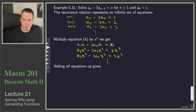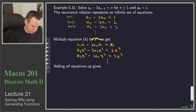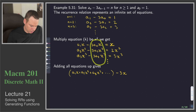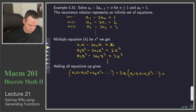At this stage we add up all these equations. When we sum them all up, what we get on the left is a_1·x + a_2·x² + a_3·x³ + ··· minus 3x times (a_0 + a_1·x + a_2·x² + ···), and on the right-hand side we get x + 2x² + 3x³ + ···.